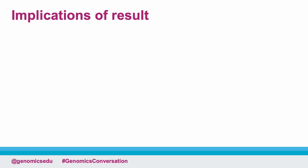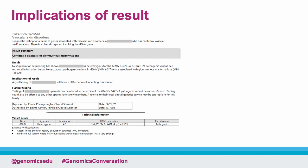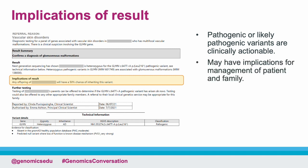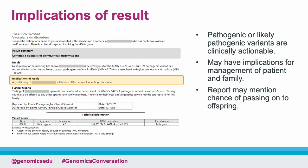Let's look again at the test report. The next section describes the implications of the test result. Variants classified as pathogenic or likely pathogenic are clinically actionable and may have implications for the management of the patient and their wider family. If a causative variant has been found, the report may mention the chance of passing this on to offspring, depending on the mode of inheritance. For example, this report highlights that as a pathogenic heterozygous variant has been identified, offspring of the patient have a 50% chance of inheriting the variant.